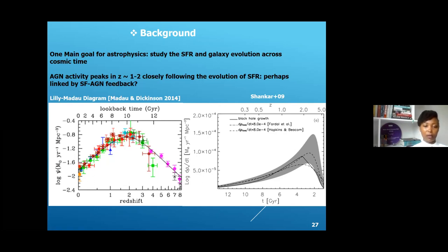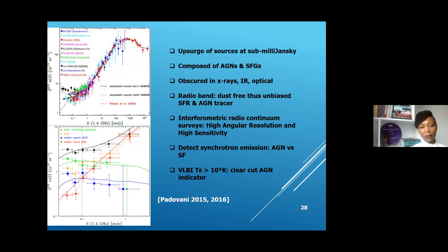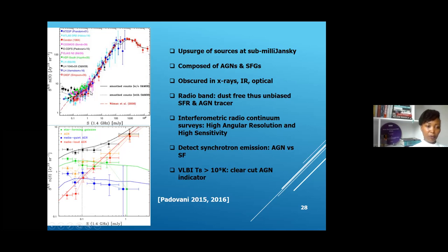This forms the background: we want to distinguish star formation from AGN activity at high redshift using radio interferometry and VLBI. When we observe faint extragalactic radio sources, there's an unexpected upsurge of sources at sub-milliJansky levels. The plot shows source count density as a function of flux density. Above 1 milliJansky the evolution is as expected, but below 1 milliJansky there's an unexpected upturn on this curve.